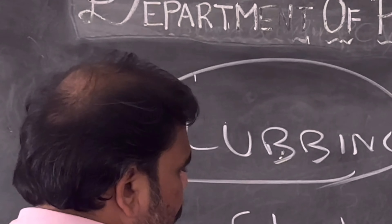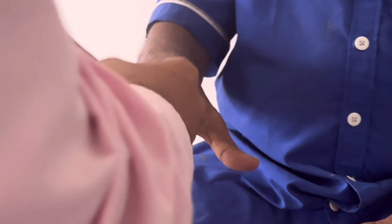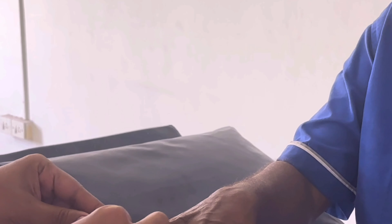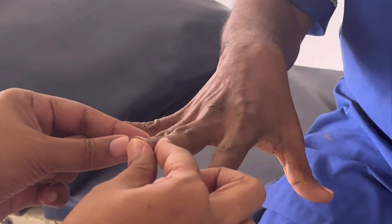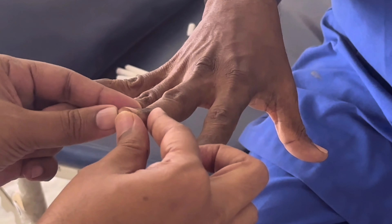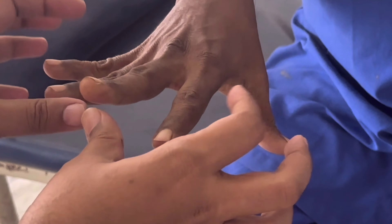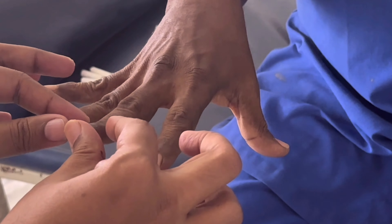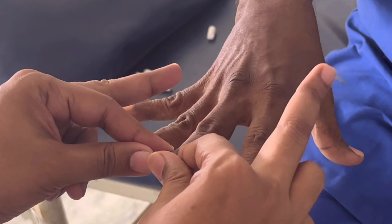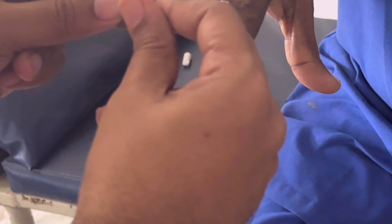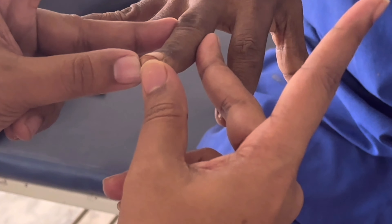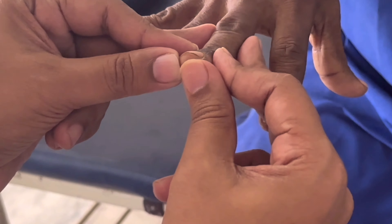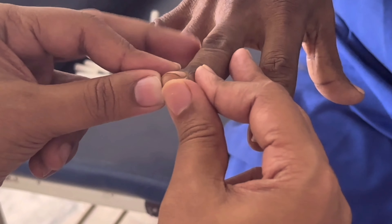Now what I am going to do is the fluctuation test. You have to do it correctly. I am keeping both thumbs in the distal part of the nail bed. This is the one I am going to check for any soft enlargement. The two thumbs are fixed in the distal part. The two index fingers are where I am going to use for touching and feeling. Both middle fingers I am keeping over the middle phalanx.